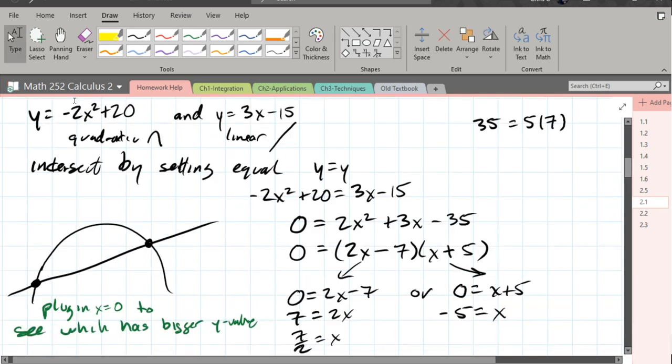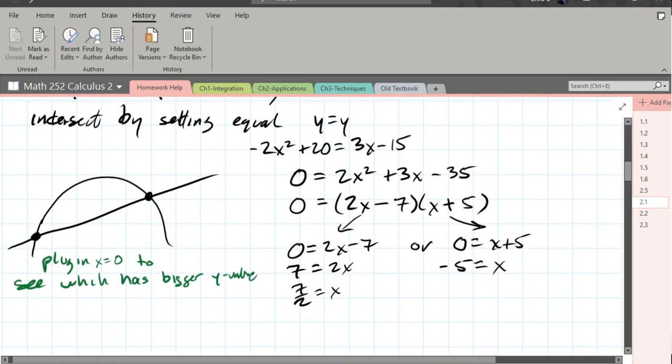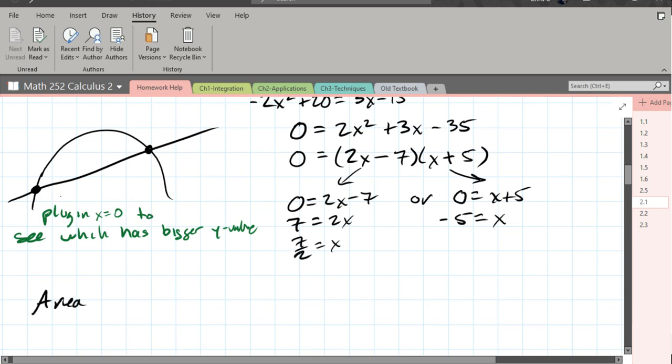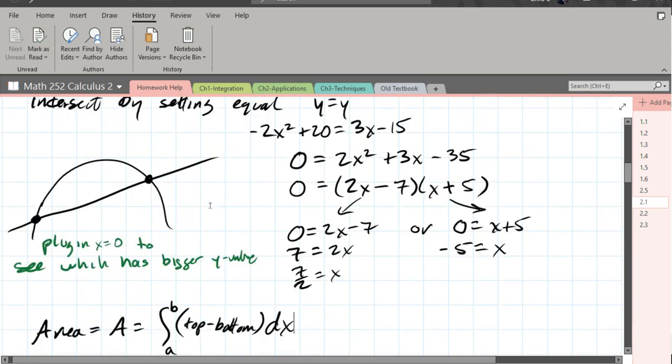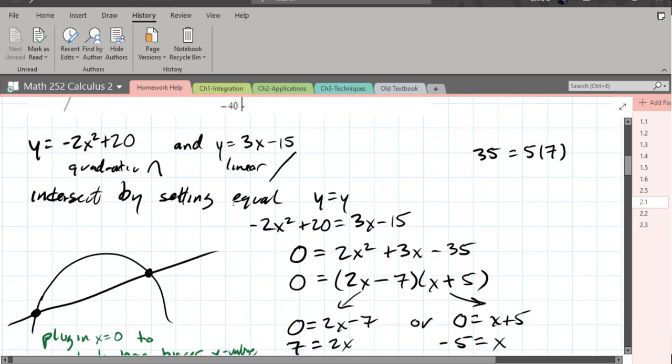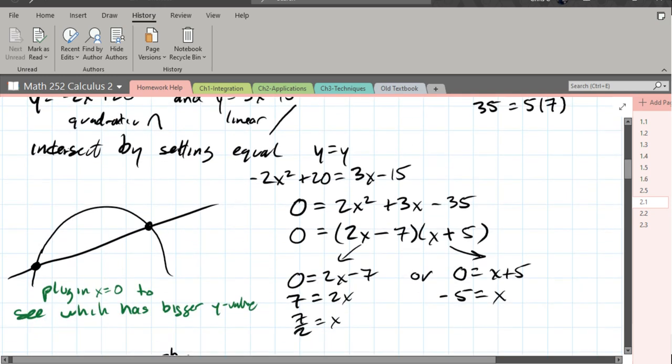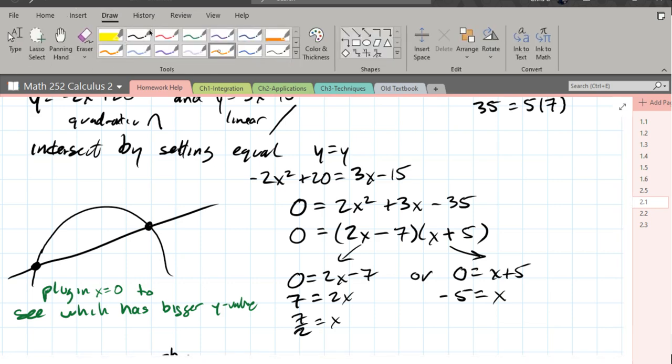Next thing we're going to do is set up our area. Area, usually use A for that. A to b. Now we've got top minus bottom. How do I know this is a dx and not dy? There's a few reasons. One of the big hints is they gave us the equations as functions of x. So you're probably going to have an x variable as your differentiation variable. Also, once you see what the graph looks like, if you want to find the area, you're going to need a cross section. And our cross section, if we choose a vertical cross section, we have the same top and bottom function as we move our cross section...